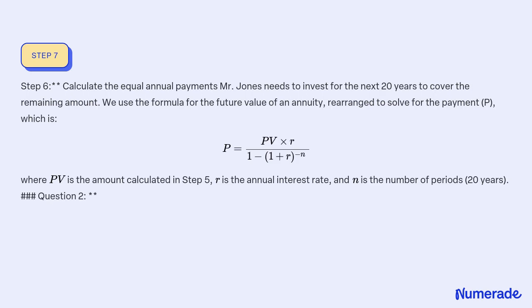Step 6: Calculate the equal annual payments Mr. Jones needs to invest for the next 20 years to cover the remaining amount. We use the formula for the future value of an annuity, rearranged to solve for payment P: P = PV × R / (1 − (1 + R)^−N), where PV is the amount calculated in Step 5, R is the annual interest rate, and N is 20 years.